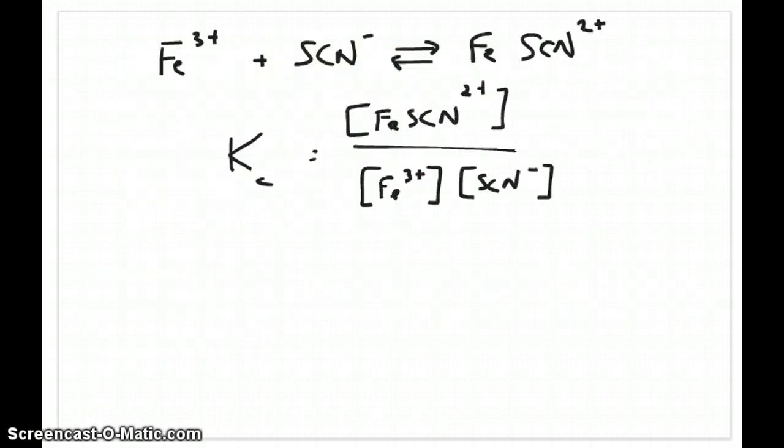As I said earlier, our goal is to calculate the equilibrium constant. So to do that, we have to first write the equilibrium constant expression. Our target reaction looks like this, and our equilibrium constant therefore would be concentration of product, which is FeSCN²⁺, divided by concentration of reactants: Fe³⁺ times SCN⁻.